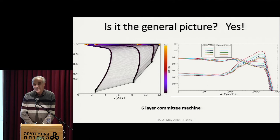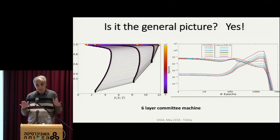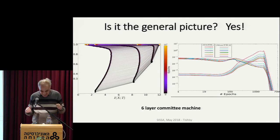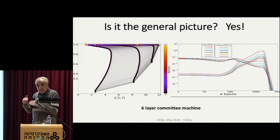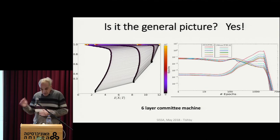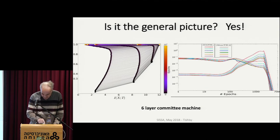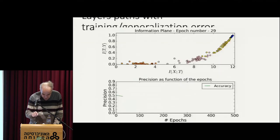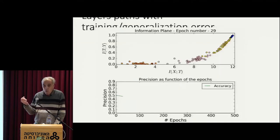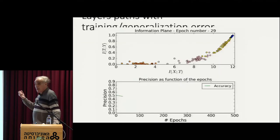That's right — that's one of the ideas. And you're actually doing it; you have the right intuition. I just want to give you the basic reason why these things happen. If you actually look at the same movie again of the information plane, together with the training error or the generalization error, you see that this point where it starts to move left — where it starts to compress — is precisely the knee of this error curve, where the error essentially flattens.